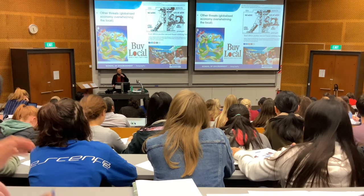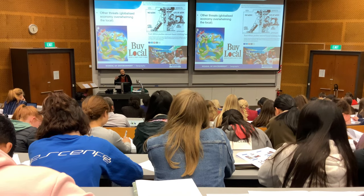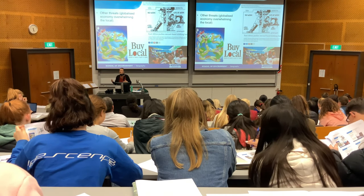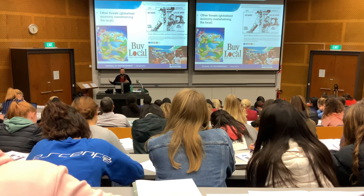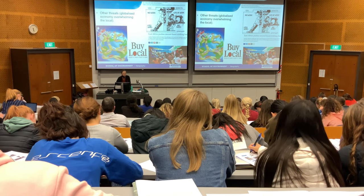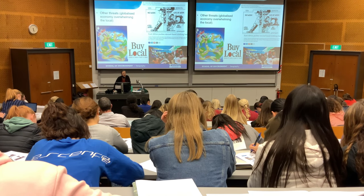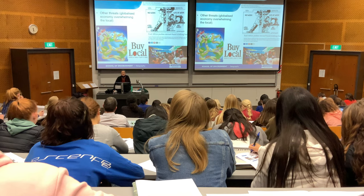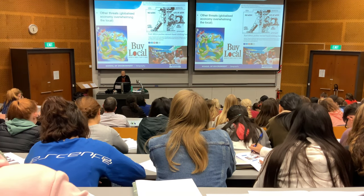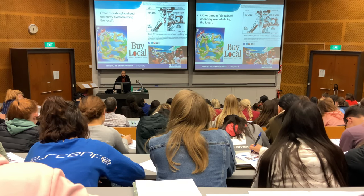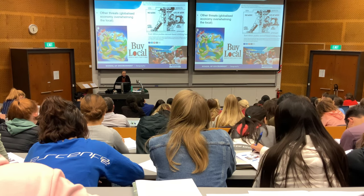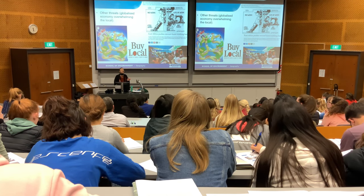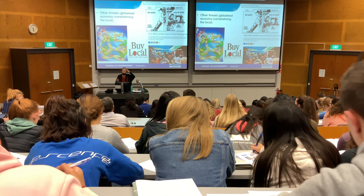The global is seen as quite threatening to the local, particularly in terms of the economy. Money's mobile, people are less so. If money moves out of an area, people are often left behind. You get standardisation of goods and practices, and many local businesses are driven out. This image of Walmart taking over the world is an example — Costco coming to New Zealand is another. Teachers, write down this term: spatial division of labour.